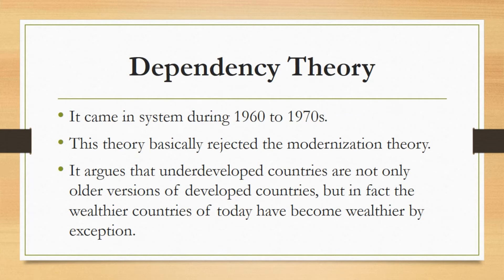The rich countries influence poor nations by controlling economics, media, politics, banking, finance, education, culture, sports, etc. These rich countries have different mechanisms through which they exploit the poor countries. IMF is one example of such mechanisms. When IMF gives a loan to a country, it influences the internal policies of that country and asks the country to do reforms of its own choice.